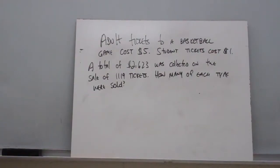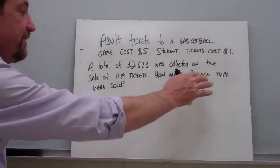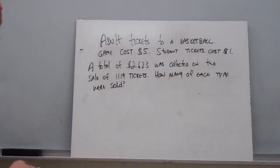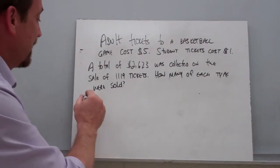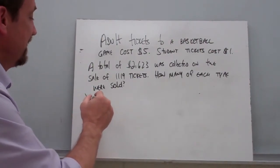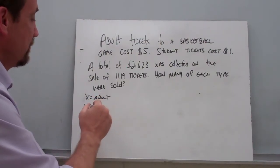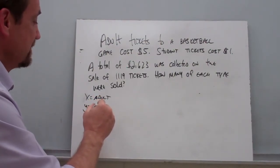We're going to have to write and solve a system of equations in order to solve this problem. The first thing we want to do is define our variables. Our question asks how many of each type of ticket were sold. We got student tickets and we got adult tickets.